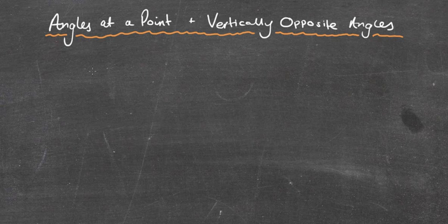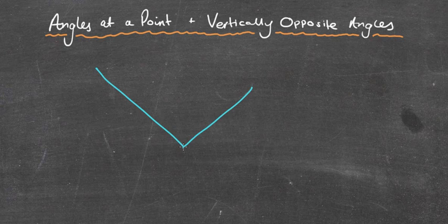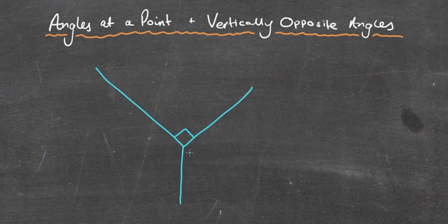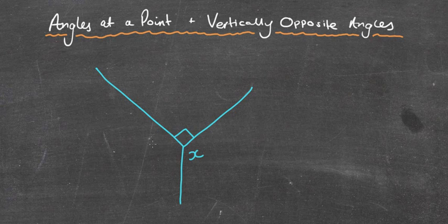Angles at a point is certainly a very important type of angle. We're looking at this particular question where we've got... I'm going to put a right angle inside there. I'm going to put that as x. I'm going to put this angle as, let's say, 140 degrees.